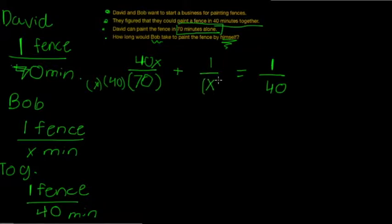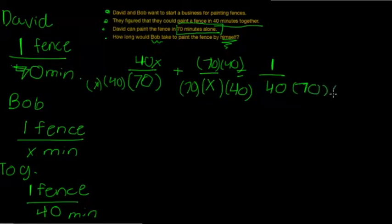For this, we're going to have to multiply this denominator by 70 and 40. So, 70 can be multiplied by 40 in the numerator as well. Now, this denominator, we need to multiply by 70 and X. Since we multiplied the denominator, we also need to multiply the numerator by 70X.